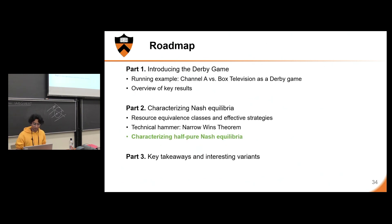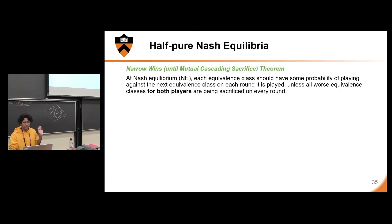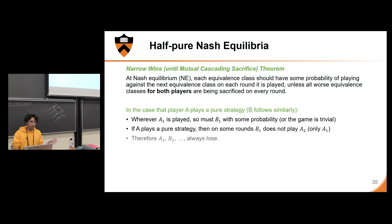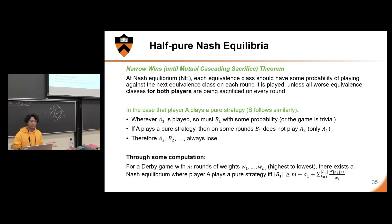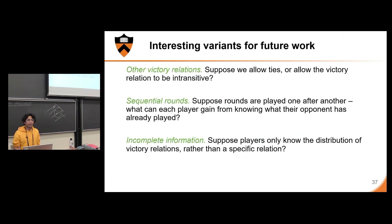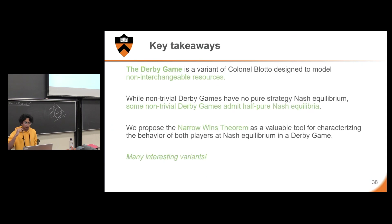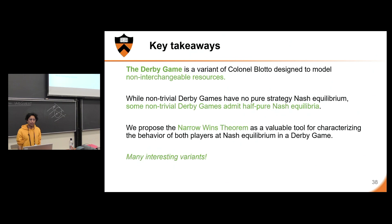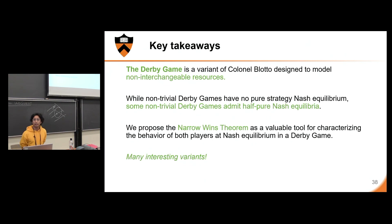I'm out of time, so I'll skip characterizing half-pure Nash equilibria and jump to the end. The Narrow Wins Theorem is quite powerful — characterizing half-pure equilibria takes about a slide once you have it. The key takeaways are: the Derby game is a variant of Colonel Blotto designed to model non-interchangeable resources, and some non-trivial Derby games admit half-pure Nash equilibria. Thanks.